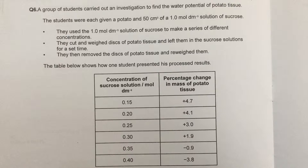You're measuring either the length increase or decrease, or the increase or decrease in mass. In this question, a group of students carried out an investigation to find the water potential of potato tissue. They were given a potato and 50 cubic centimetres of a one molar per decimetre cubed solution of sucrose. They used it to make a series of different concentrations, cut and weighed discs of potato, left them in sucrose for a set time, then removed and reweighed them. The table shows the processed results.